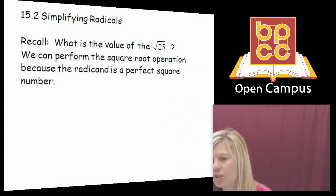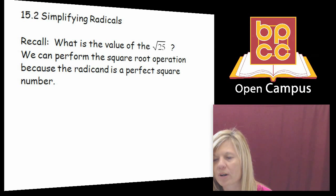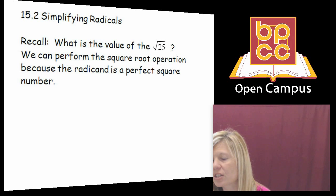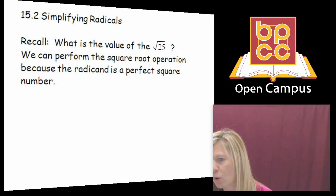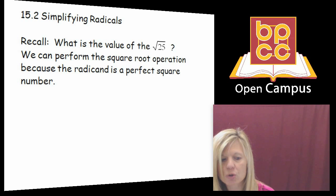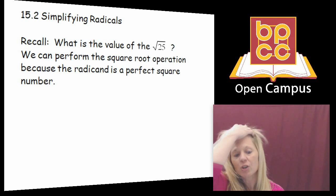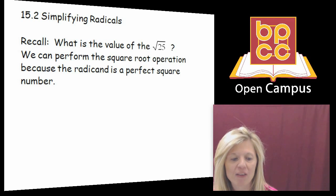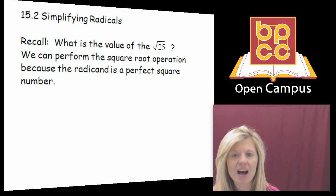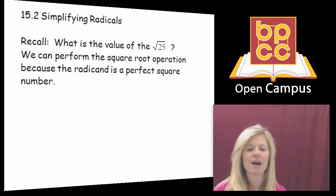Just to start us off, let's understand what is the value of the square root of 25. We've already discussed this — 25 is a perfect square number. There is a number times itself which is 25. So when I ask you the square root of 25, you automatically give me the answer 5, because we know 5 times 5 is 25.